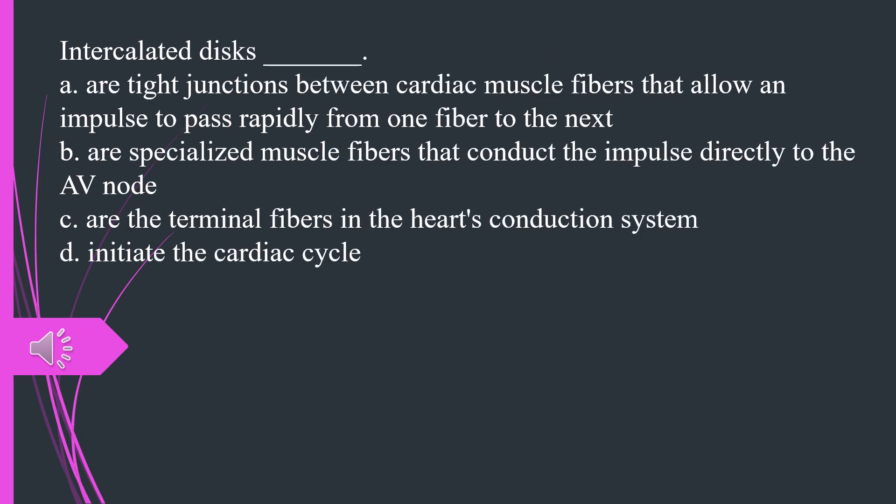Intercalated discs A. Are tight junctions between cardiac muscle fibers that allow an impulse to pass rapidly from one fiber to the next B. Are specialized muscle fibers that conduct the impulse directly to the AV node C. Are the terminal fibers in the heart's conduction system D. Initiate the cardiac cycle. The answer is A.